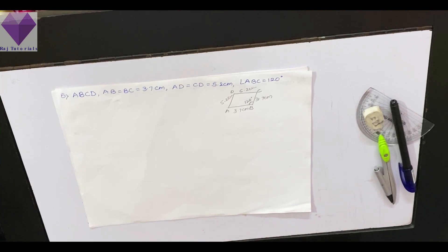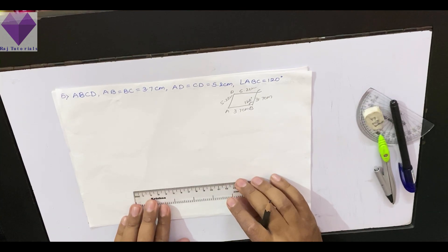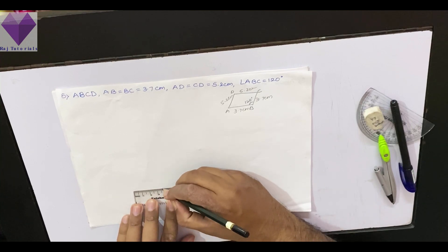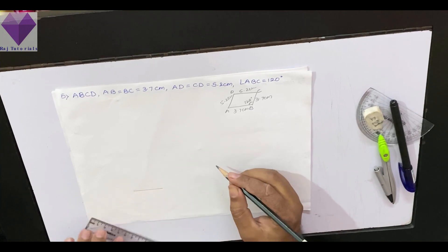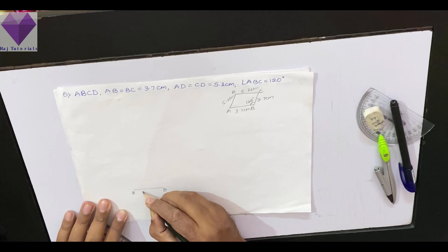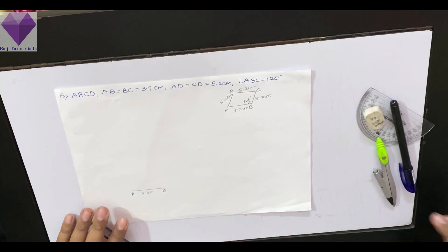First I have drawn the rough diagram, now I am making the pair diagram. First of all I will be making a 3.7 cm base, that is AB. Now on this base, I have to draw a 120 degree angle.